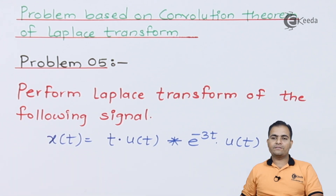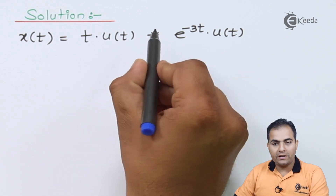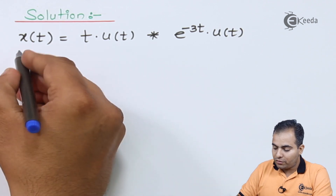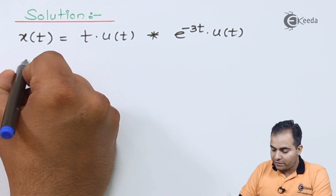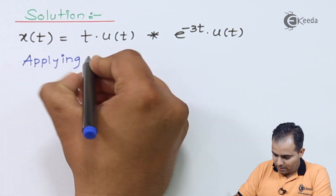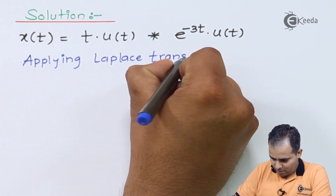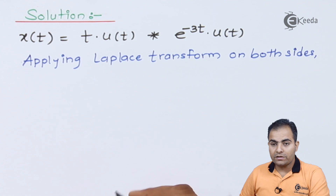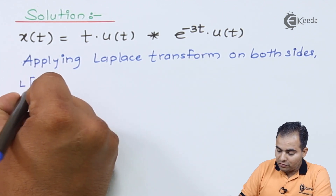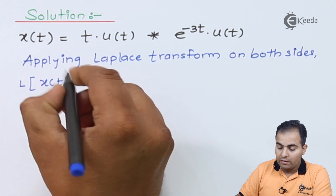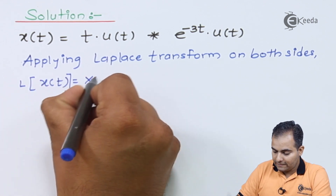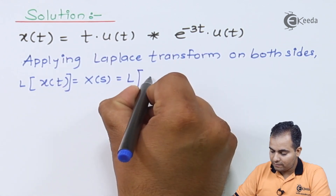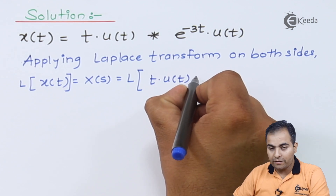Now go through the solution. x(t) = t·u(t) convolved with e^(-3t)·u(t). Applying the Laplace transform to both sides, we get X(s) on the left side, and on the right side we have the Laplace transform of t·u(t) convolved with e^(-3t)·u(t).